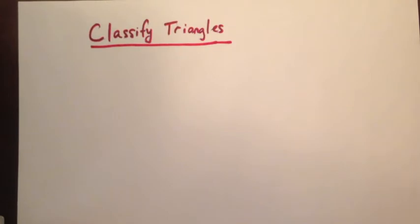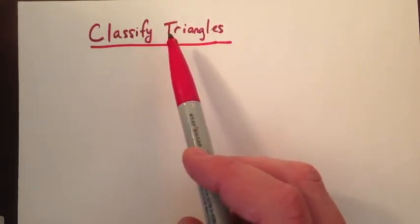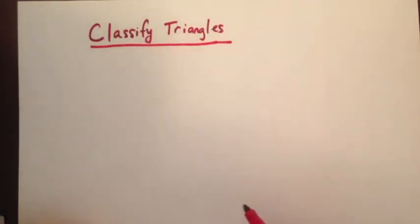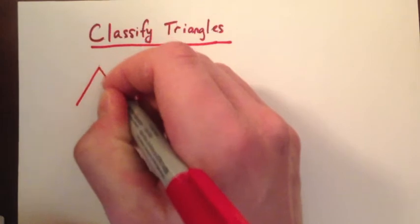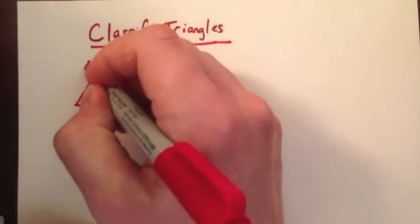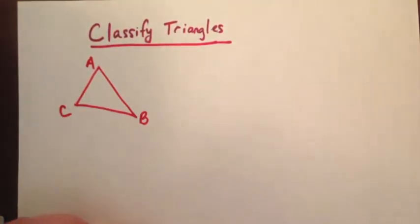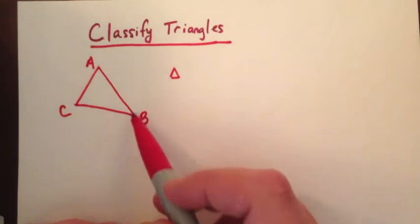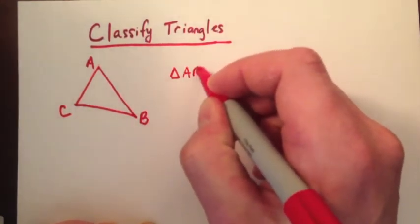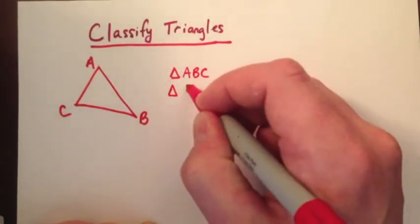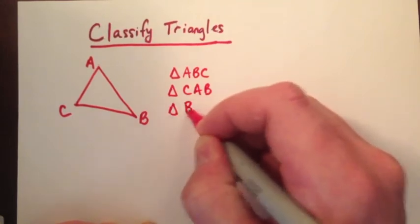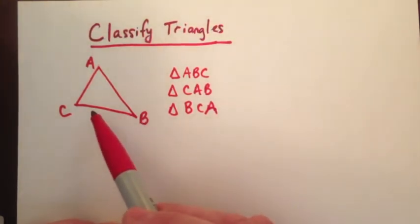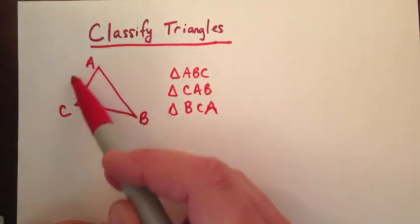Our topic for today is classifying triangles and looking at angle measures involved with triangles. The first thing we'll do is talk about classifying — how we name them. We'll draw a triangle and call it triangle ABC. When you name a triangle, you use a triangle symbol and write the three vertices. You could write ABC, CAB, or BCA — the order doesn't matter. You can start with any point and move clockwise or counterclockwise.